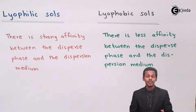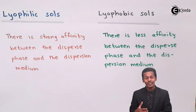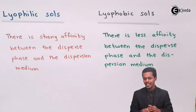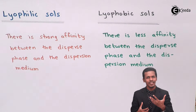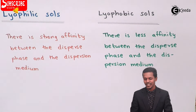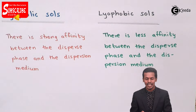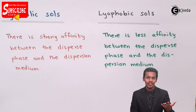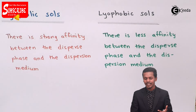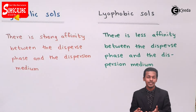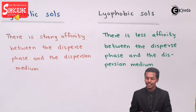As the name suggests, 'philic' means attraction and 'phobic' means fear or repulsion. Let us understand the definitions of these two terms.